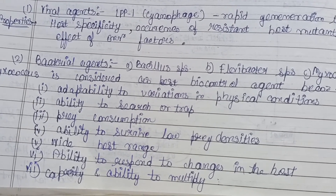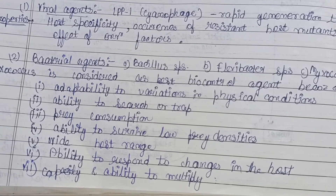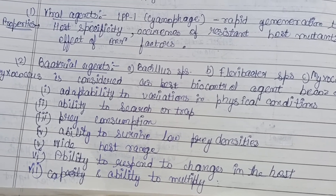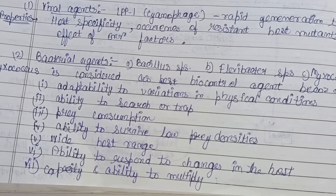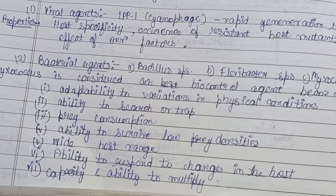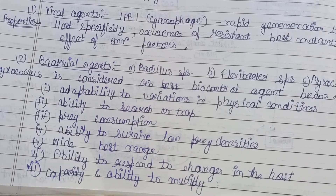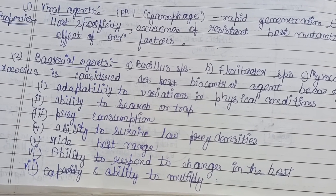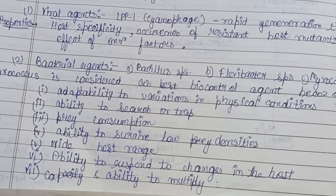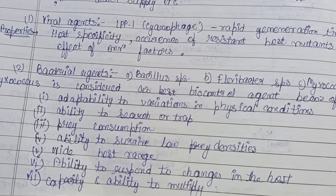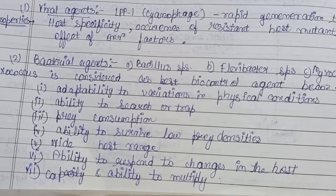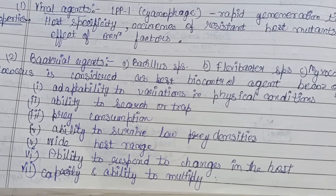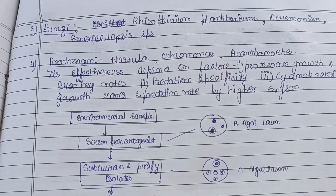Myxococcus also has the ability to survive low prey density — since cyanobacterial bloom density is not always high, it has adapted to survive when prey is scarce. It has a wide host range, acting on various types of hosts rather than only one species. It has the ability to respond to changes in the host — if the host develops mutations to protect itself, Myxococcus can change accordingly — and the capacity to multiply rapidly, similar to the cyanophage virus.